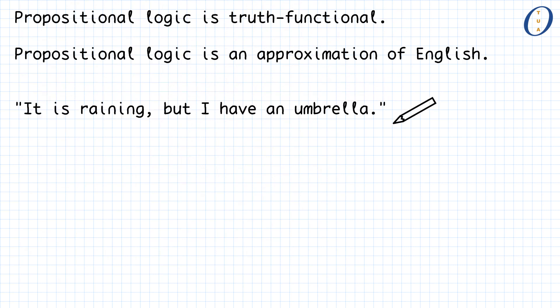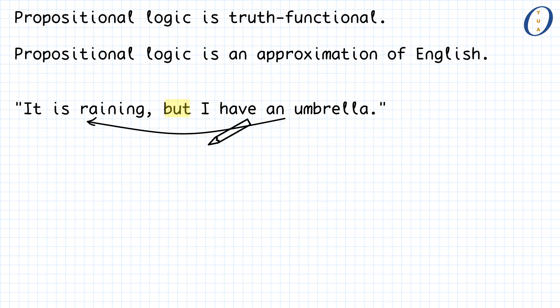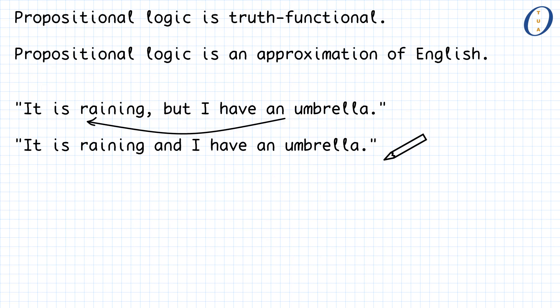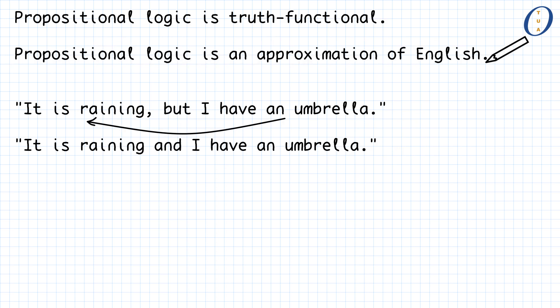For example, an English statement such as 'it is raining but I have an umbrella' would be considered a conjunction in propositional logic. The contrast between having an umbrella and rain, suggested by the use of the word 'but,' is lost in translation. In propositional logic, there would be no difference between that proposition and 'it is raining and I have an umbrella.' This fact — that propositional logic is a truth-functional approximation of English — turns out to be one key insight needed to truly understand implication.